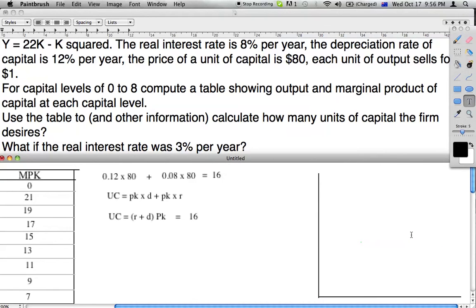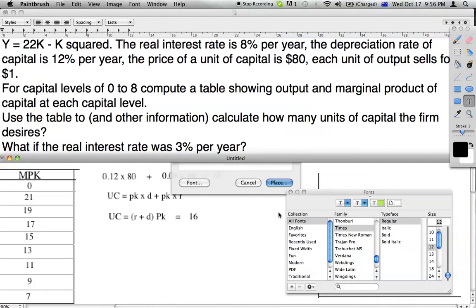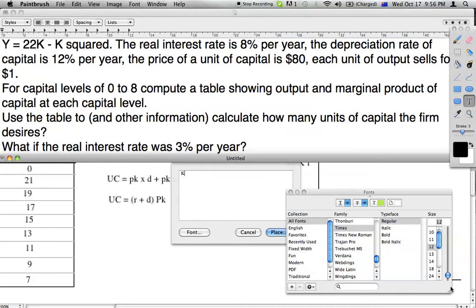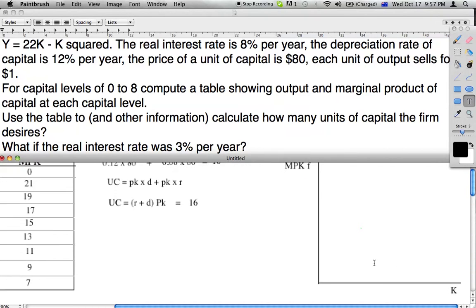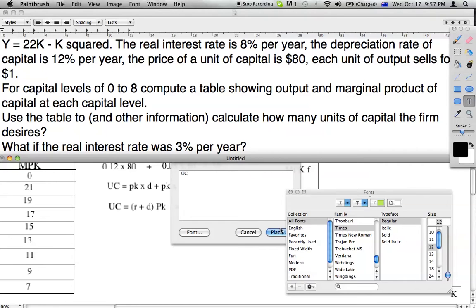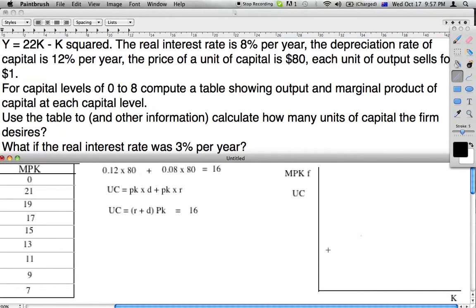Before I continue on to figure out the answer, I'll move to this graph. We are going to look at marginal product of capital in the future, and the x-axis will look at the amount of capital bought. This could also be looked at as user cost of capital. We now know the user cost of capital is 16, so we can draw a straight line across.